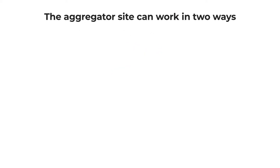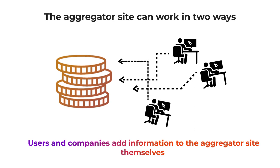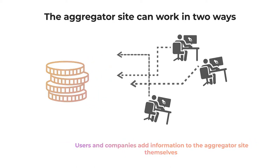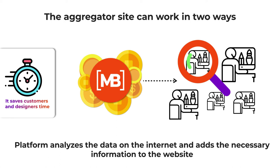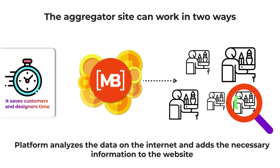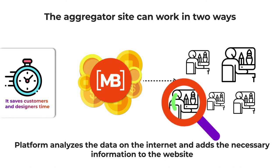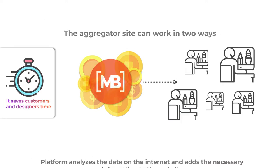Because you simply have an extra way of promoting your arts and other digital products on one more platform — and that's absolutely free. The aggregator side can work in two ways. One is when users and companies add information to the aggregator themselves; in this case, each user needs a personal account for a comfortable interaction with the platform — eBay is an example of such a marketplace. The second model is about the aggregator searching for information; in this case, the platform analyzes data on the internet and adds the necessary information to the website, allowing users to quickly gain access to product catalogs and buy a product by going to the original vendor's site.